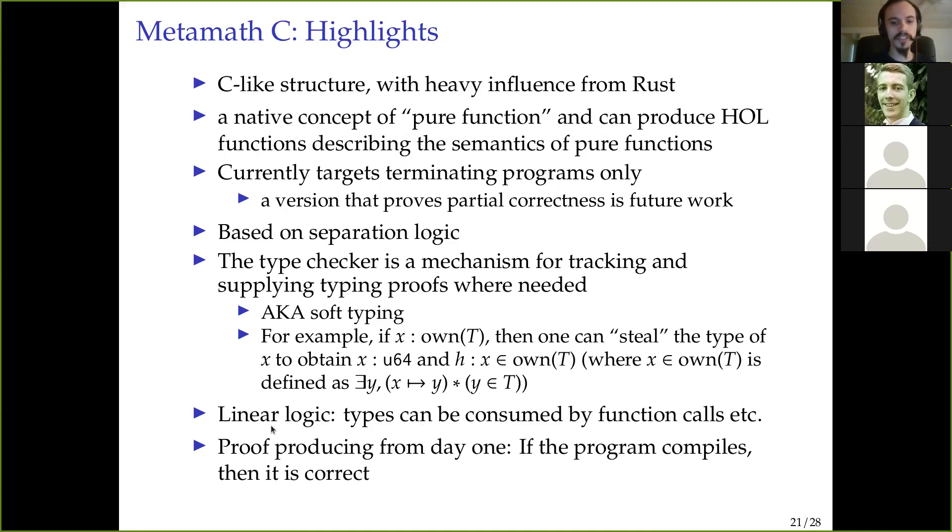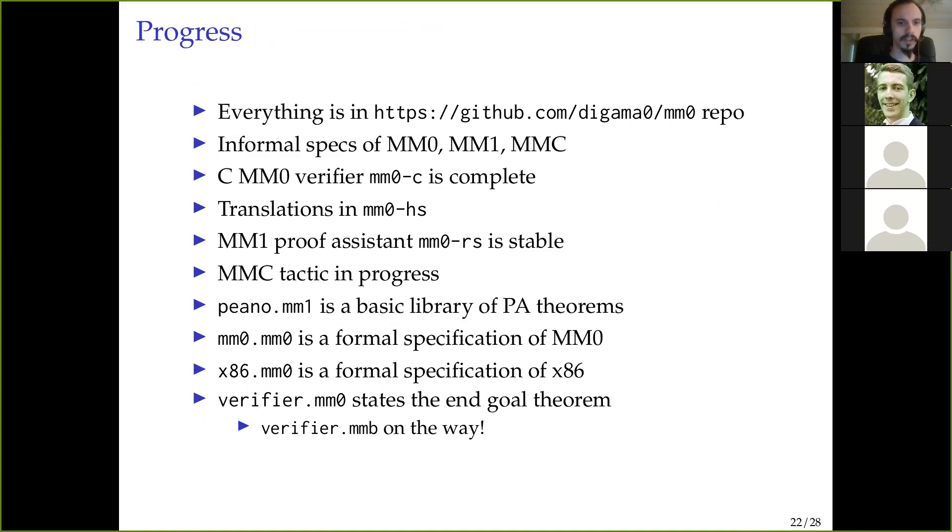And the type checker here, this is essentially a soft typing system. So the type checker is a mechanism for tracking and supplying typing proofs where needed. And you can actually sort of split a variable from its type. And then you can pass around the fact that this variable has a certain type, which can be useful. And types can be consumed by function calls and so on. So that actually makes it a lot more like a Rust-like linear logic.